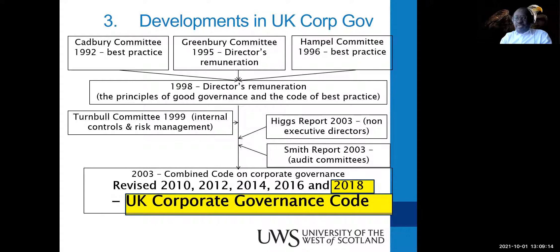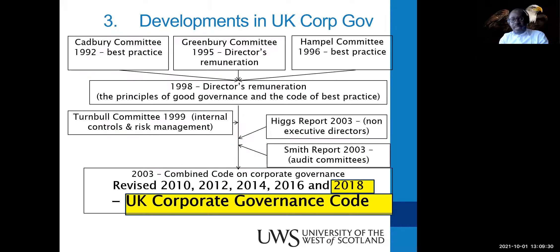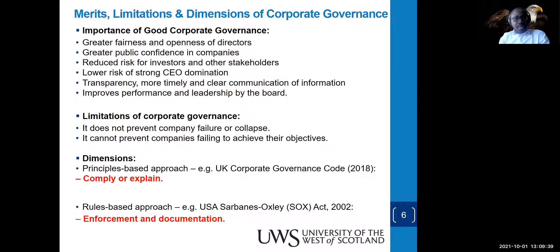The code has been revised over the period from 1992 to now, with the latest revision taking place in 2018. I'll post a document online showing the evolution and functions of these various committees, how they've reached the current stage of the 2018 corporate governance code, its importance, its limits, and its dimensions.